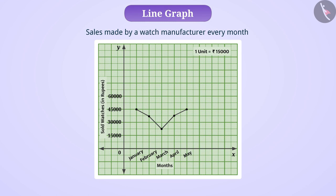You can see that the sales of watches in various months are shown with different points which have been joined by line segments.